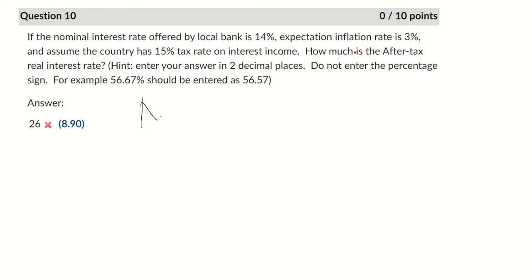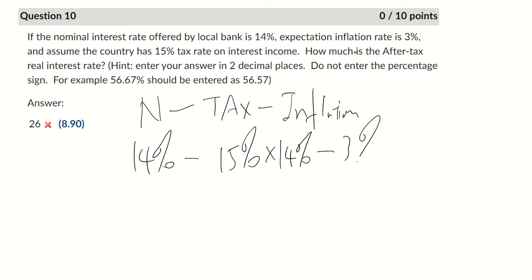So we're going to use our nominal interest rate minus how much tax you pay, and then minus how much our inflation is. So our nominal income is 14%. Now the tax will be 15% of our 14%. And then minus inflation is 3%.